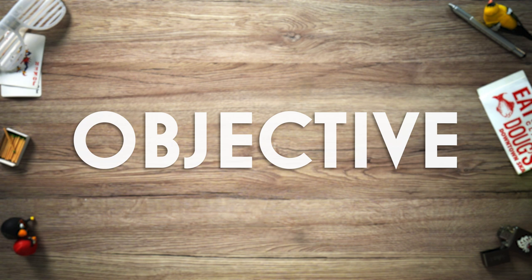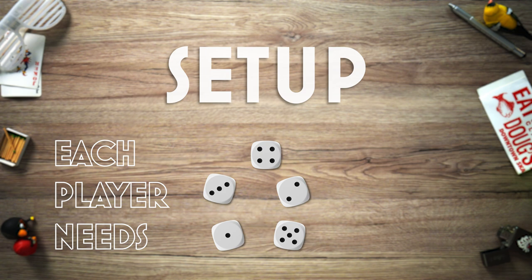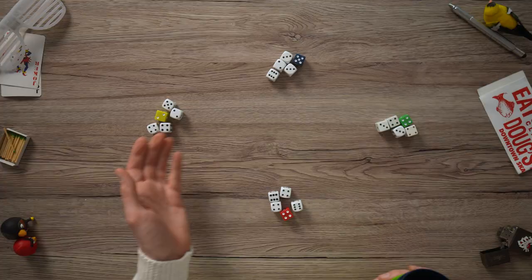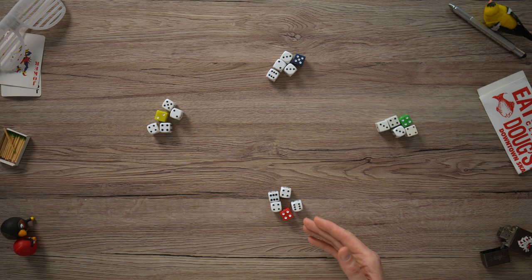The objective of Liar's Dice is to be the last player with dice remaining. Each player starts with five dice and a cup to conceal their rolls. Liar's Dice is best played with four or more players, so let's look at a four-player style game here. We have four sets of five dice for each player, and I put a colored die for each group so we can differentiate.